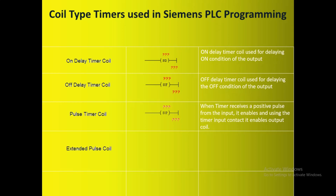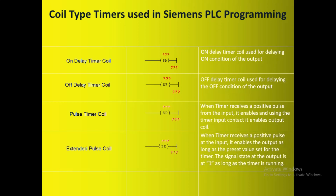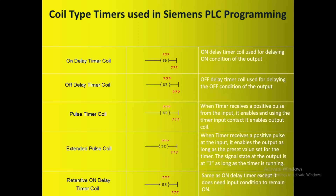The next one is the Extended Pulse Coil, and this is the notation used in PLC for this timer. When the timer receives a positive pulse at the input, it enables the output as long as the preset value set for the timer. The signal state at the output is 1 as long as the timer is running. If the input changes from 1 to 0 before the time interval has elapsed, the timer continues to run and enables the output until the accumulator value reaches the preset value. This is the same as the On Delay Timer except it does not need the input condition to remain on — it needs only a single pulse to turn on. A reset coil from the bit instructions needs to be used separately to reset the timer.